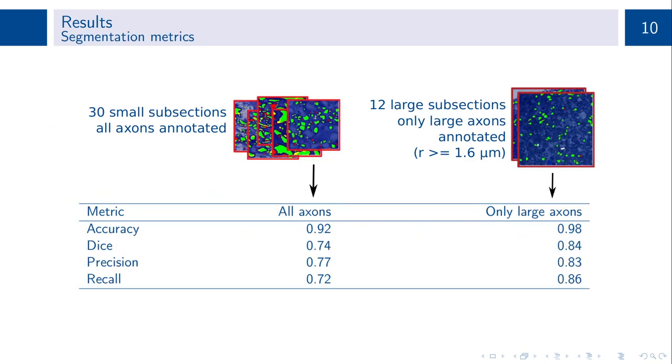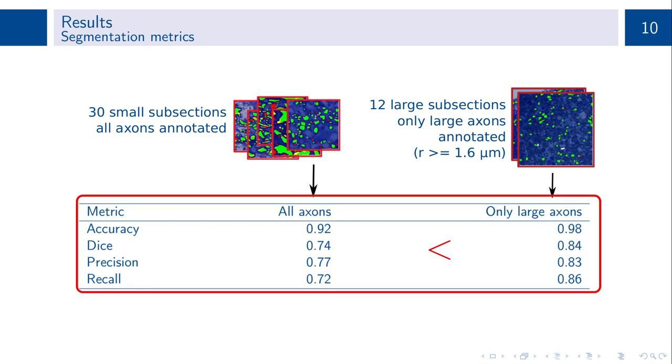We tested the segmentation performance on 30 small and 12 large LSLM subsections. Whereas small patches were entirely annotated, larger patches were only selectively annotated for axons with a radius of at least 1.6 microns to assess the performance on MRI-relevant large axons. All metrics given in the table consider the binary classification task of discriminating axon and background and are given as the mean values of all subsections. The performance on large axons was consistently better than the overall performance for every metric considered.